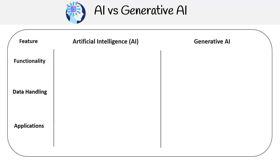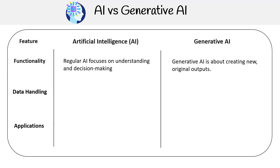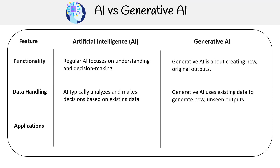Let's quickly summarize the differences of regular AI versus generative AI across three features: functionality, data handling, and applications. Regular AI focuses on understanding and decision making, whereas generative AI is about creating new original outputs. In terms of data handling, regular AI analyzes and bases decisions on existing data, while generative AI uses the same data to generate new, previously unseen outputs.